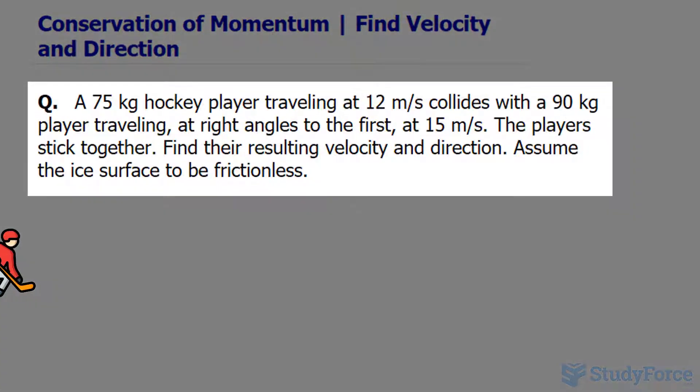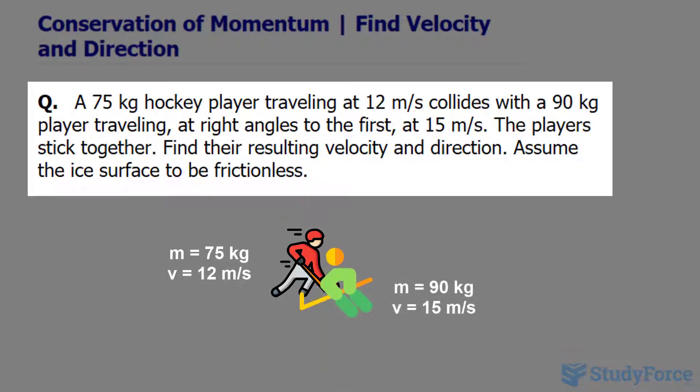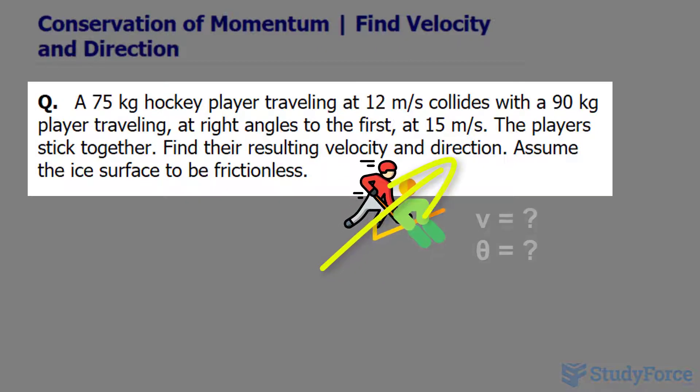The question reads: a 75 kilogram hockey player traveling at 12 meters per second collides with a 90 kilogram player traveling at right angles to the first at 15 meters per second. The players stick together. Find the resulting velocity and direction. Assume the ice surface to be frictionless.